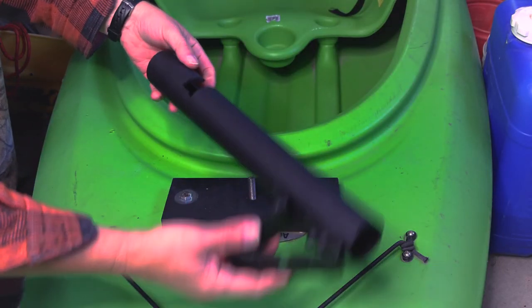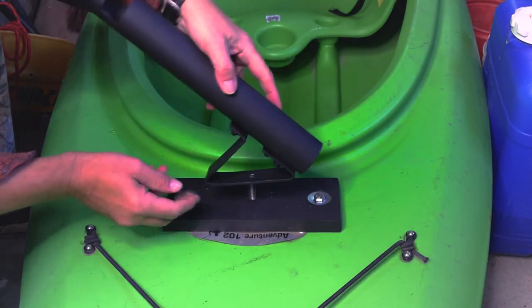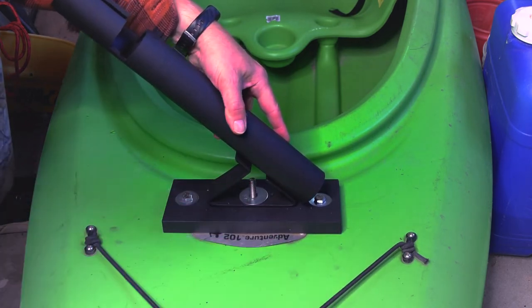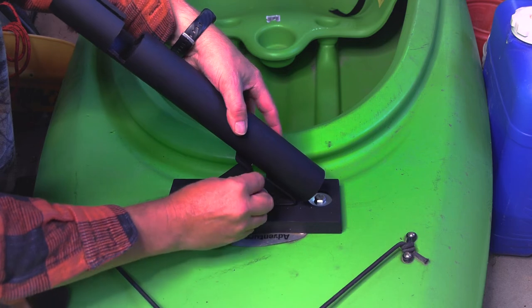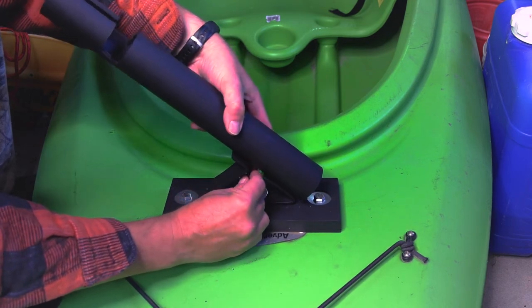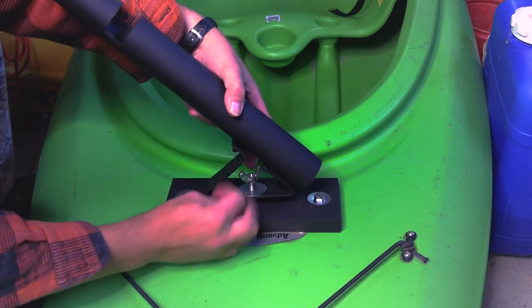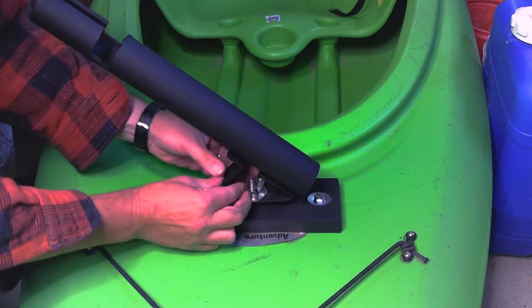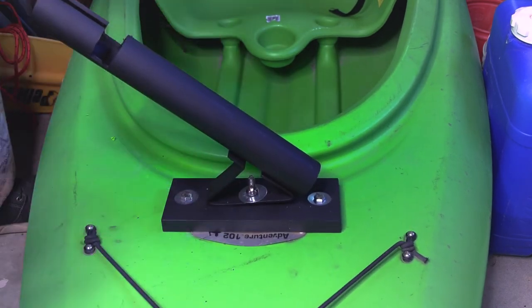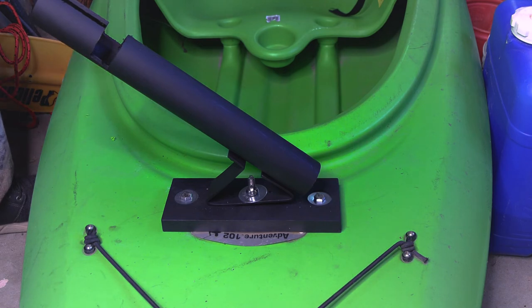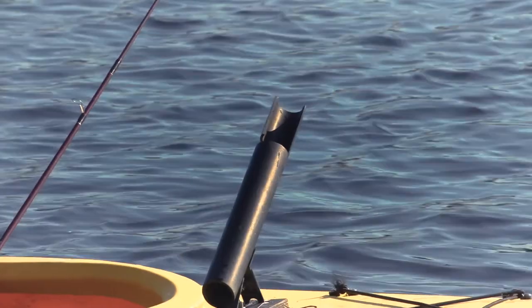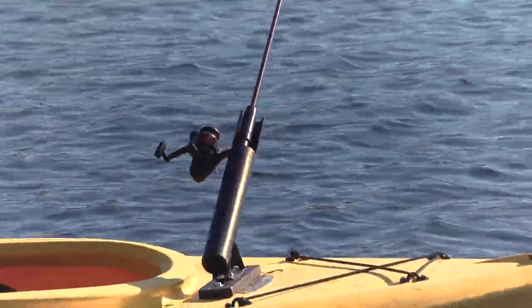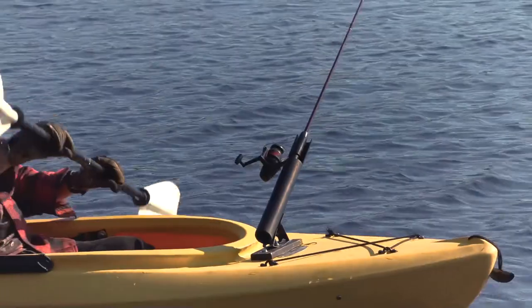So now I've got the completed rod holder here all set to go. Let's put it on. Make sure it fits into the pilot hole. That'll keep this whole thing from twisting around. And there we have it. Rod holder is mounted, ready to go. There. Well, I hope you enjoyed the video. I'm going fishing.